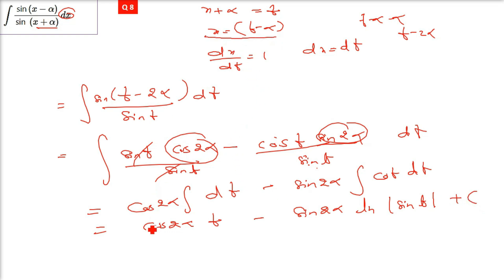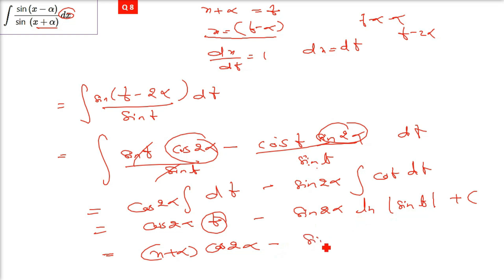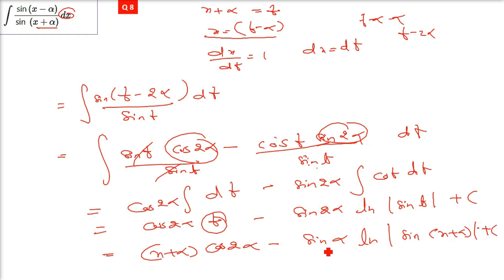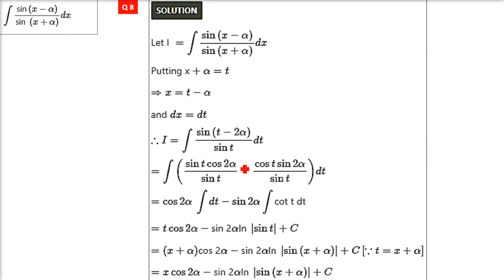Now replace t with (x + α): cos(2α)·(x + α) − sin(2α)·ln|sin(x + α)| + C. This is your final result, a clean step-by-step reproduction of the solution.